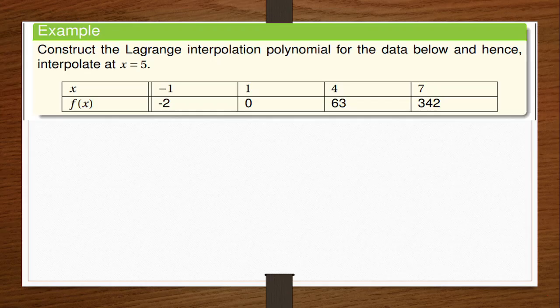But if on the first day I buy you no oranges, on the fourth day 63 oranges, on the seventh day 342 oranges — now if I ask you how many oranges I'll buy you on the sixth day, you can't actually tell. So what we are doing with Lagrangian interpolation is that we want to create a formula. If I give you the day, you can tell me the number of oranges.